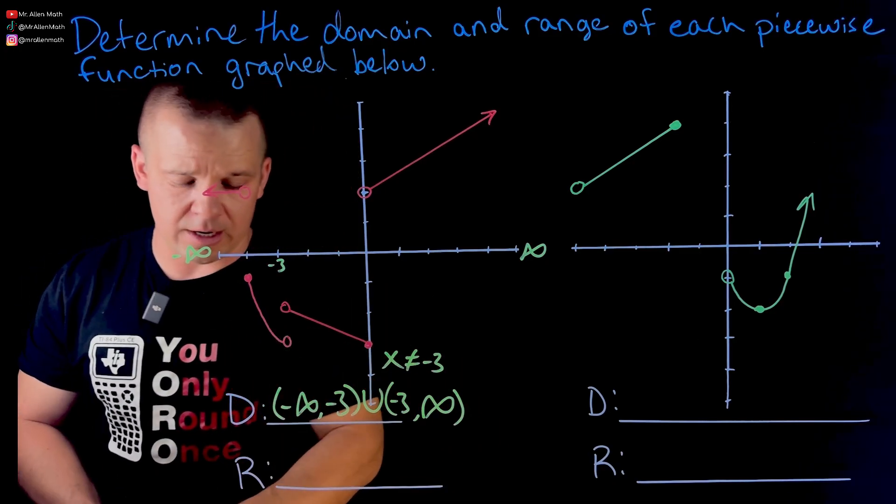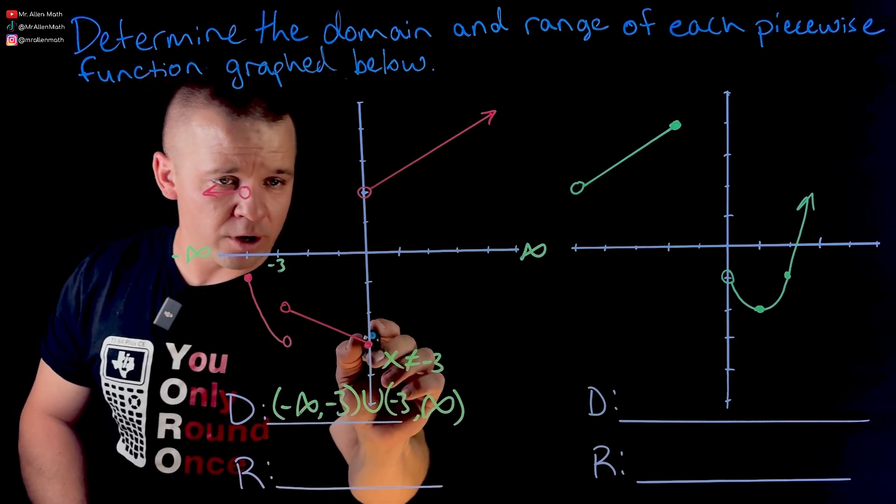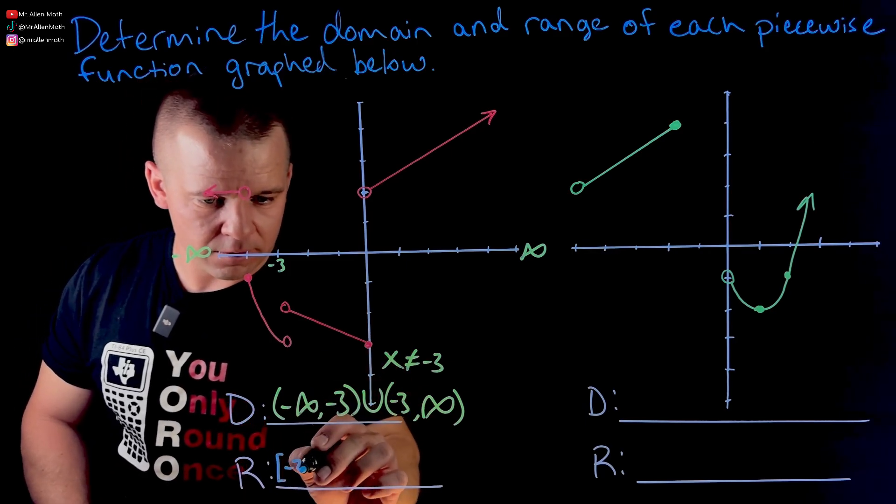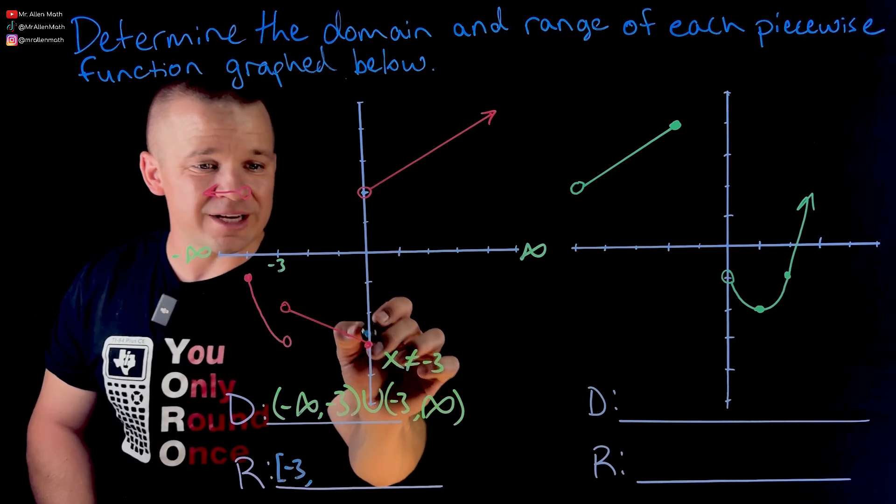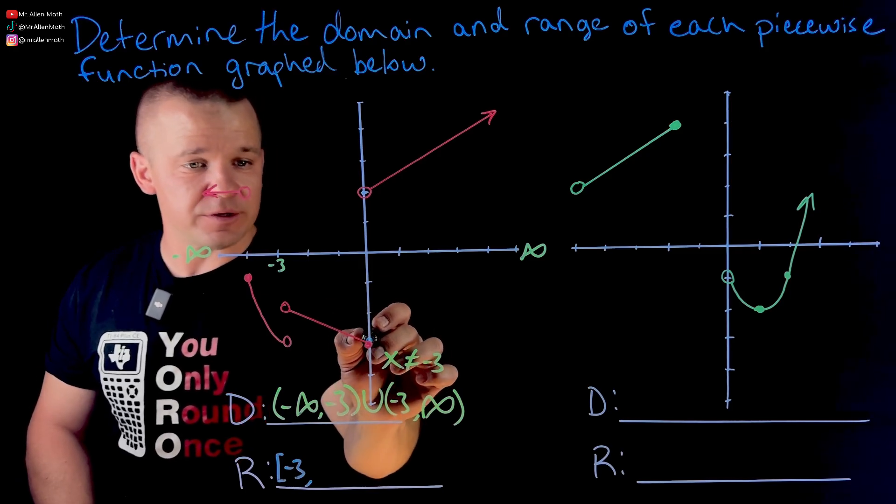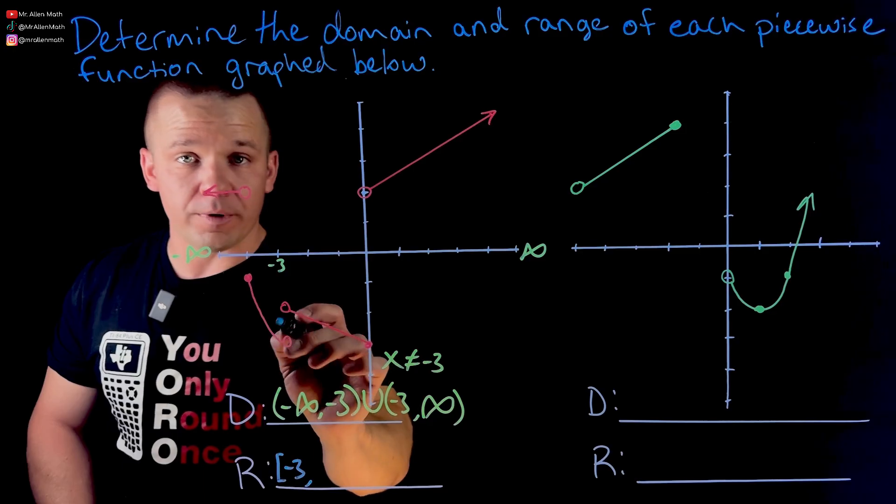So we'll start at negative three and we're including that value of negative three, right? That's a point on that graph. It's a solid point. If this was open, you'd see parentheses here because both of those are open.